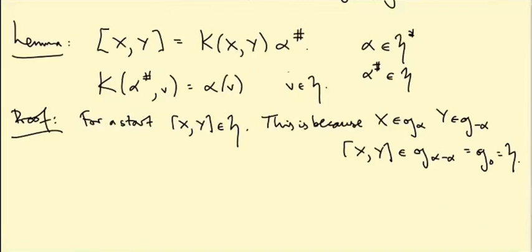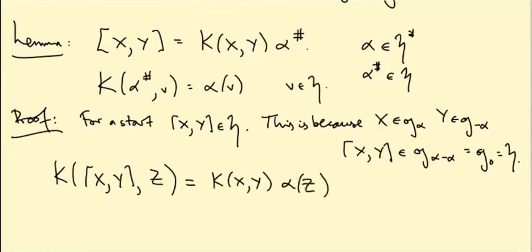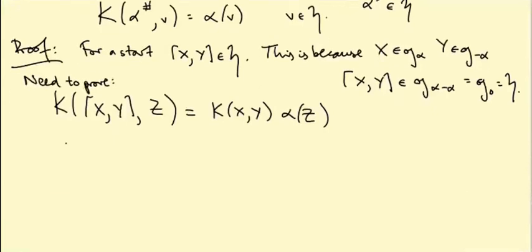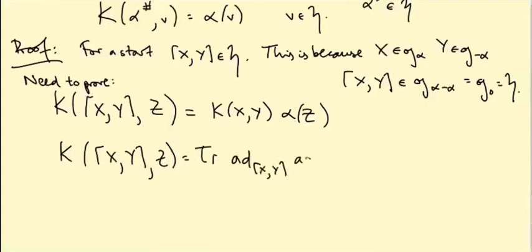To show that it's this element, what we need to do is we need to compute K of X bracket Y with Z and show that this is equal to K(X,Y) of alpha of Z. This will be enough to prove that X bracket Y is this multiple of alpha sharp by definition of alpha sharp. So we need to prove this. So let's evaluate this.